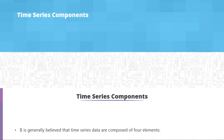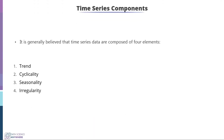Hey guys, welcome back. In this lecture we will look into the time series components. In general, time series data are composed of four elements: trend, cyclicality, seasonality, and finally irregularity. In any time series data you will find these components. Let's look into each component one by one.